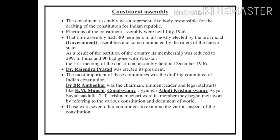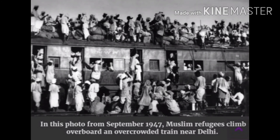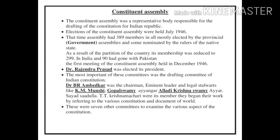In a previous video, I talked about the princely states during British rule — so many princely states were there, also known as native states. As a result of the partition of the country, the membership was reduced to 299. The representative body was originally 389, but after independence, the country was divided into two parts — Pakistan and India — and 90 members went to Pakistan, leaving 299 members in India.